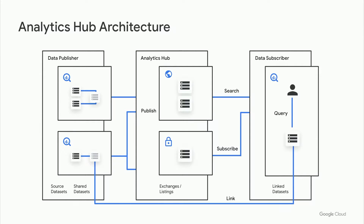Here's how Analytics Hub works behind the scenes. Starting on the left, as a data publisher, you bring your data into BigQuery and create shared data sets which contain the tables and views you want to share. Then you publish these data sets into an exchange with additional information such as documentation and sample queries — these become your data set listings. Exchanges can be either private or public. As a data subscriber on the right, you search through all listings across exchanges you have access to, subscribe to a data set, and a linked data set is created in your project that can be queried or joined with other data.